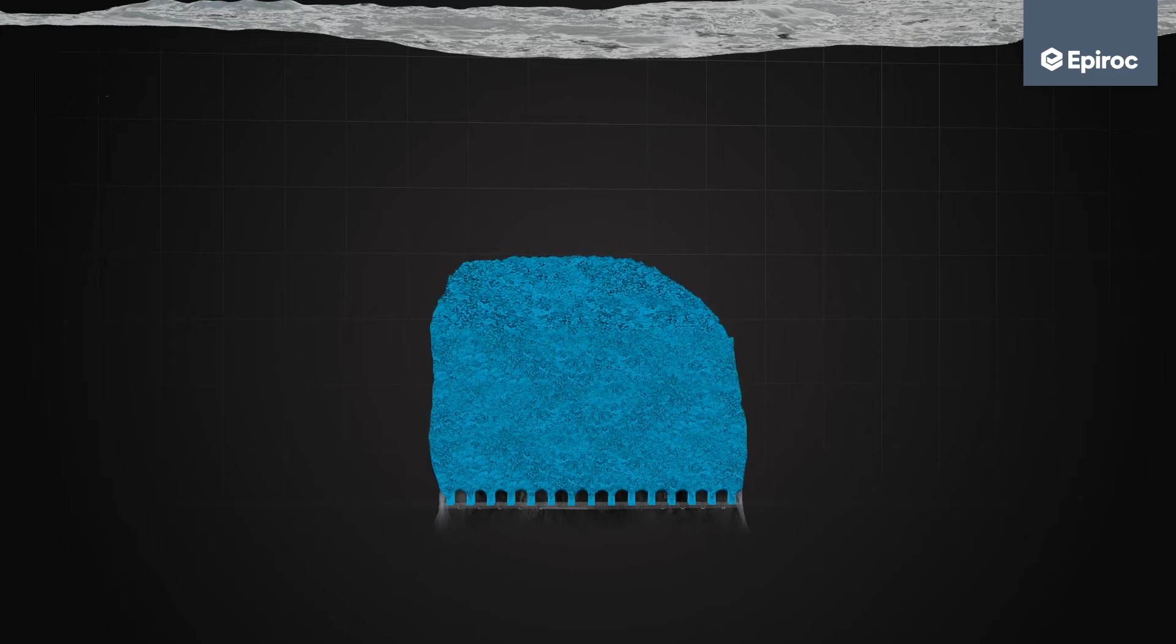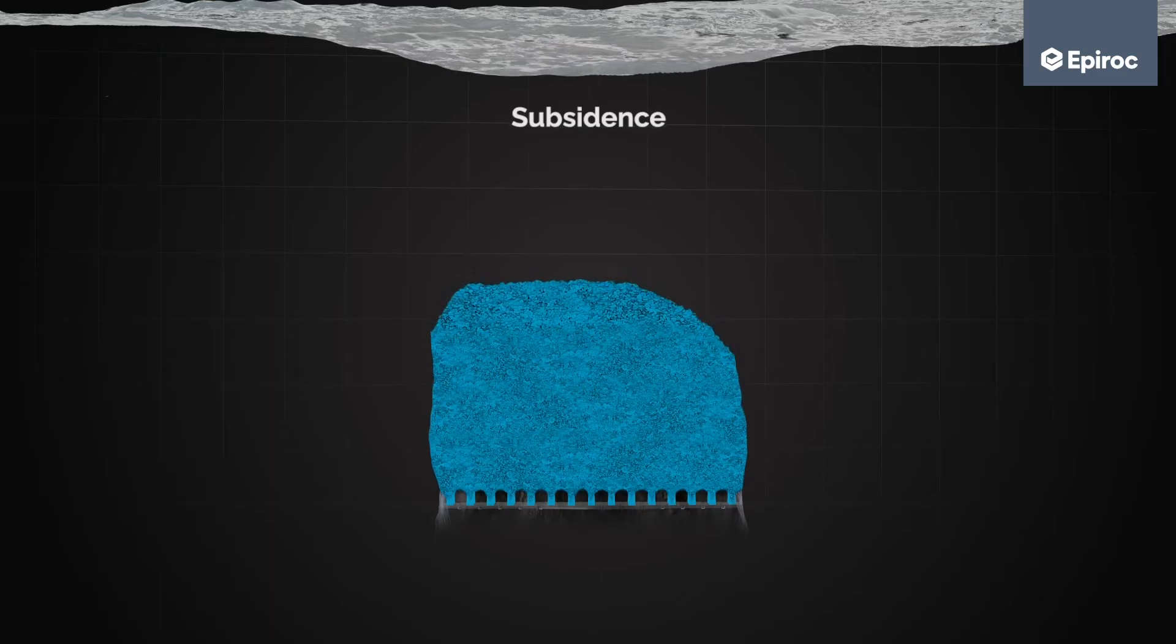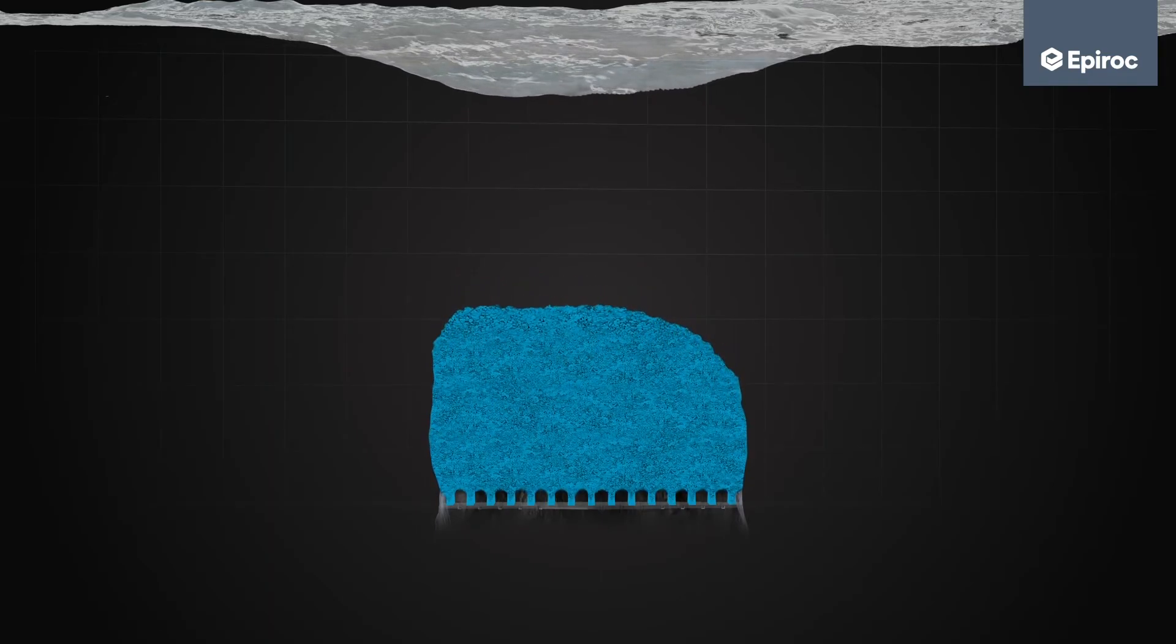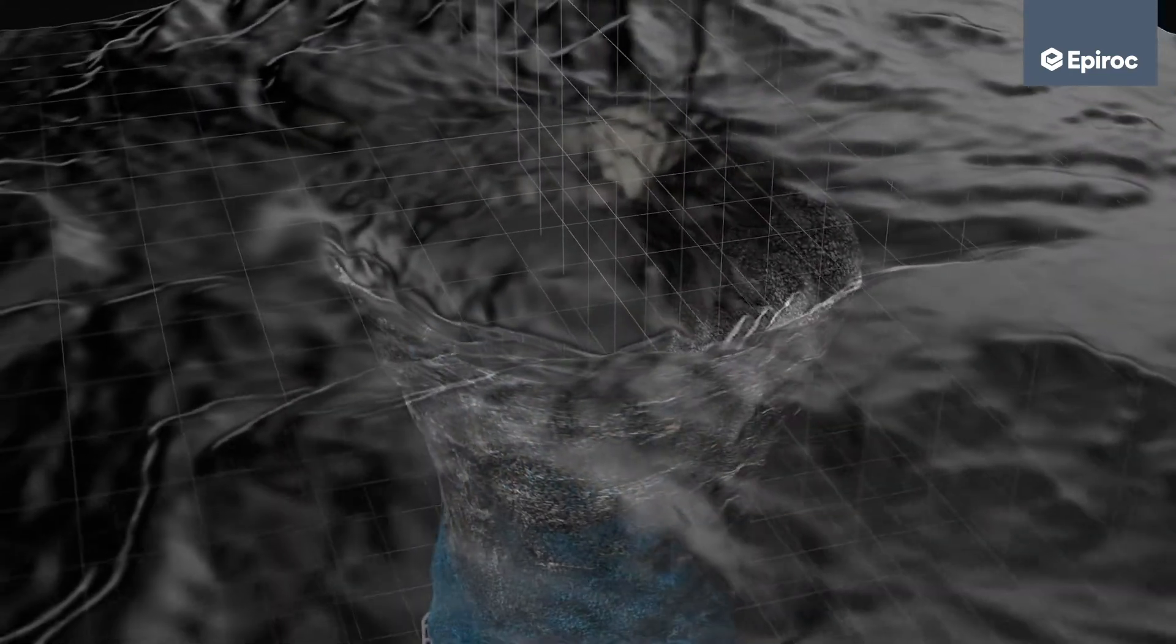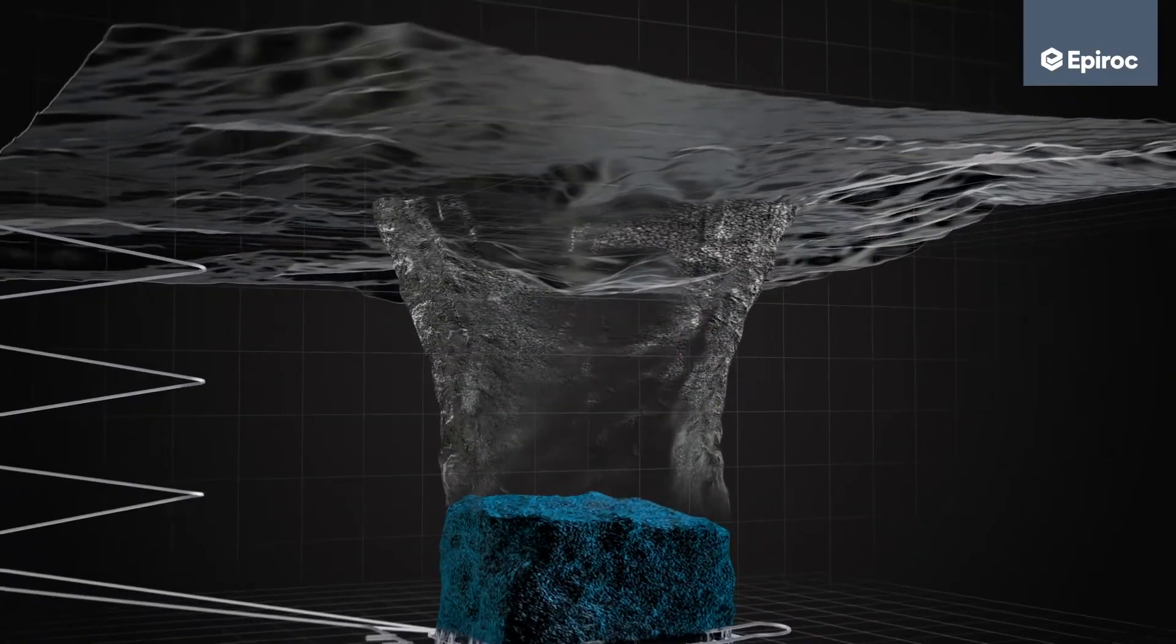The extraction of ore will sooner or later cause the surrounding rock to cave, resulting in subsidence on the surface, provided the rock breaks successfully and the ore can be extracted evenly at desired draw points.